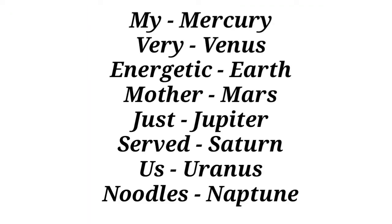So in this sentence, the first letter of each word would give you the first letter of each planet. M is for Mercury, V is for Venus, E is for Earth, M is for Mars, J is for Jupiter, S is for Saturn, U is for Uranus, and N is for Neptune. See you soon.